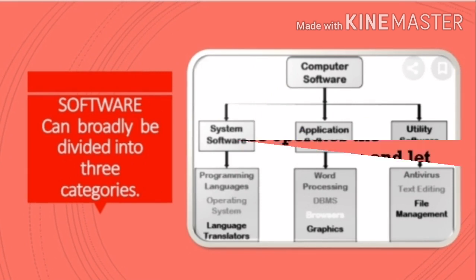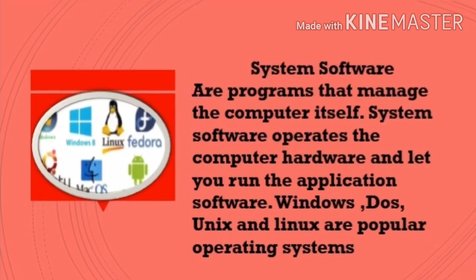The first one is system software. System software are programs that manage the computer itself. System software operates the computer hardware and lets you run the application software. Windows, DOS, Unix and Linux are popular operating systems.